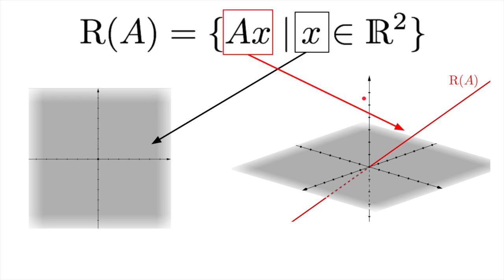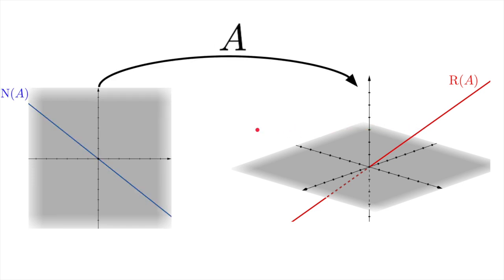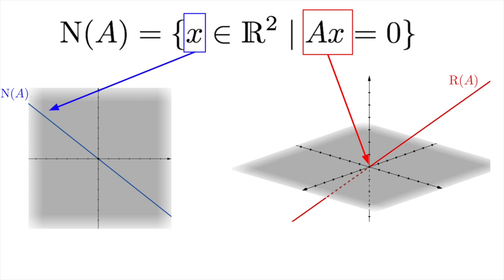For review, the range, or column space of A, is the set of all vectors that A maps to in the output space. So you take any vector in R2, apply A to it, which involves taking a linear combination of the columns of the matrix representing A, and you get a vector whose tip is on this line. Let's also say that the null space of A is a line, here represented by this blue line in R2. Again, for review, the null space, or the kernel, of A is the set of all vectors in the input space that A maps to zero in the output space. If either of these concepts of null space or range are unfamiliar, I would highly suggest looking at 3Blue1Brown's linear algebra series. He goes into a lot more detail.